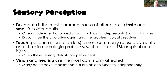Touch, also called peripheral sensation loss, is most commonly caused by an acute or chronic neurologic condition — think stroke, traumatic brain injury, or spinal cord injury. Unfortunately, especially with traumatic brain injury and spinal cord injury, those sensory deficits are typically permanent. Vision and hearing are the most commonly affected sensory perception deficits, and many adults have impairments but are able to function independently, often with the use of some corrective aid.